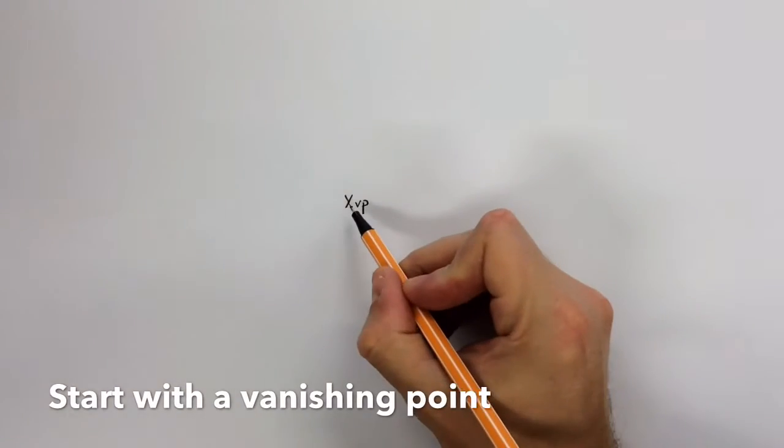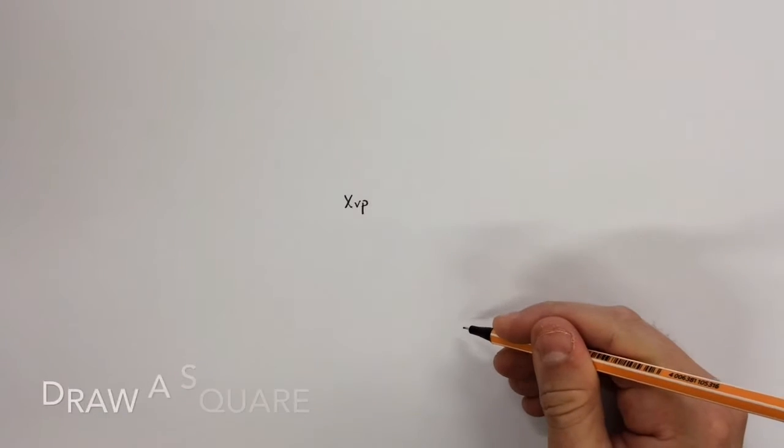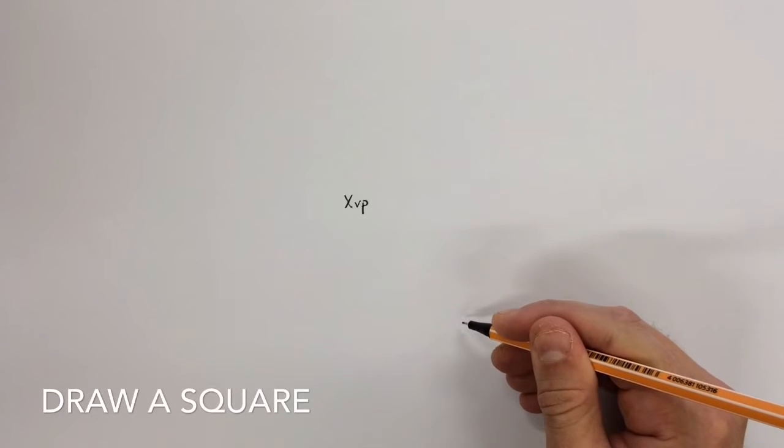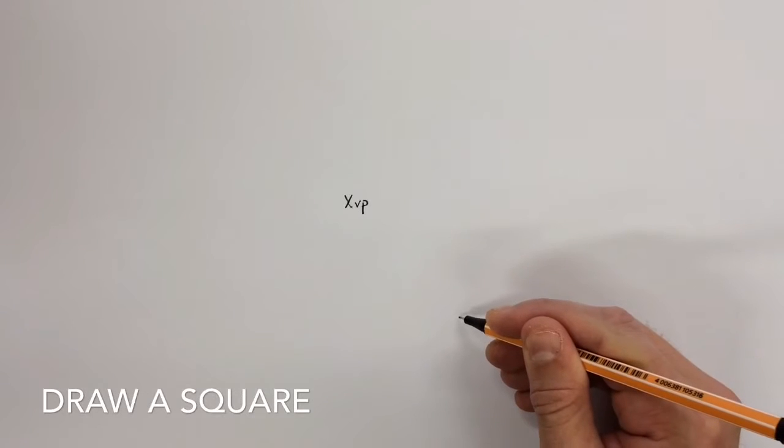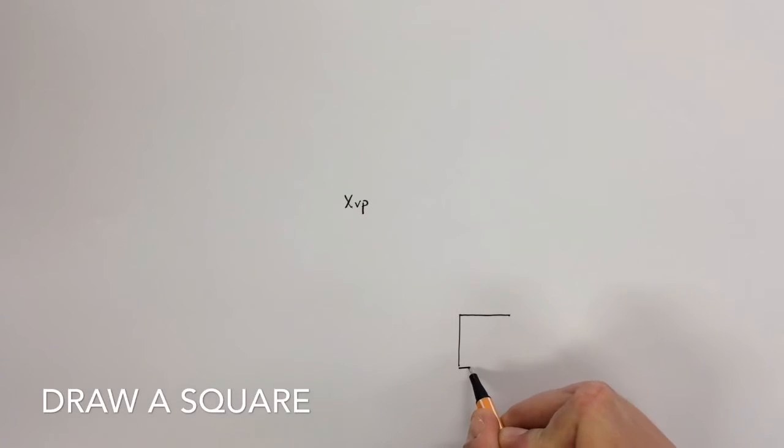In the middle of the page is a cross, that's a vanishing point. Your first job to create a 3D shape in one point perspective is to draw, in this case, a square.